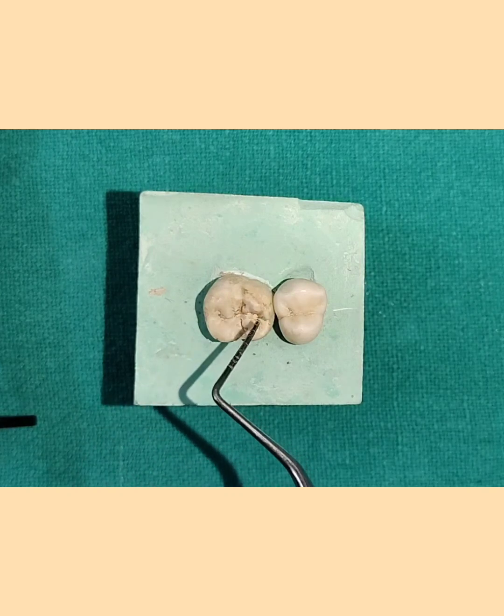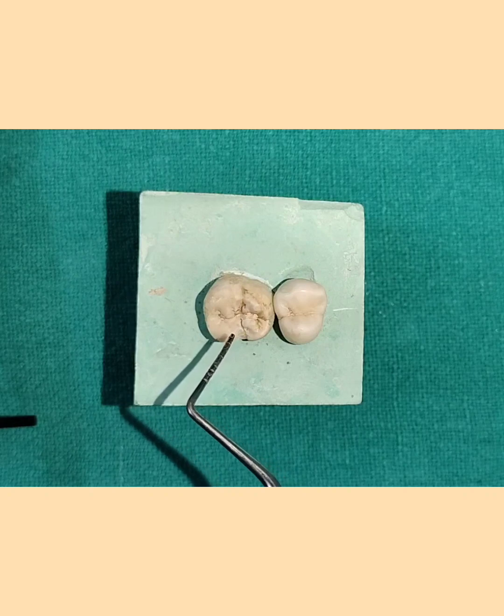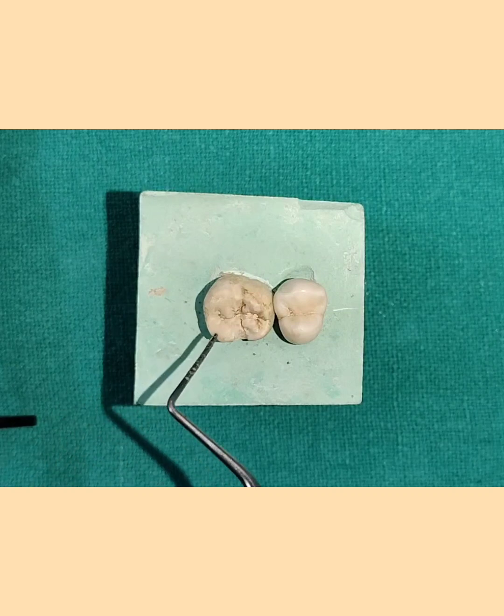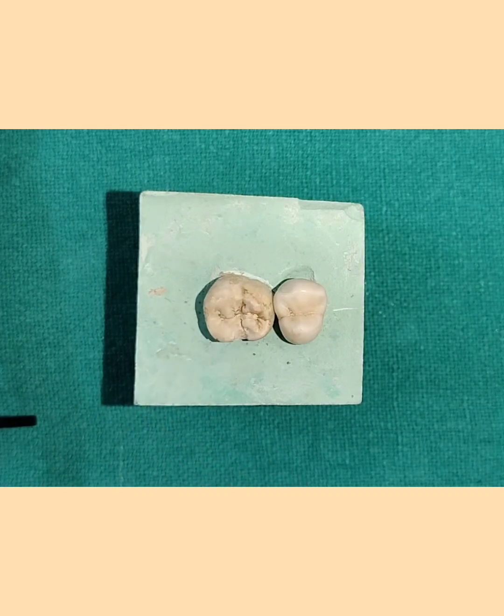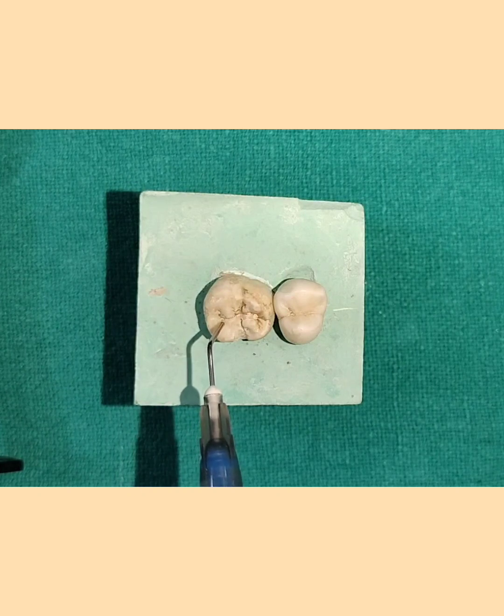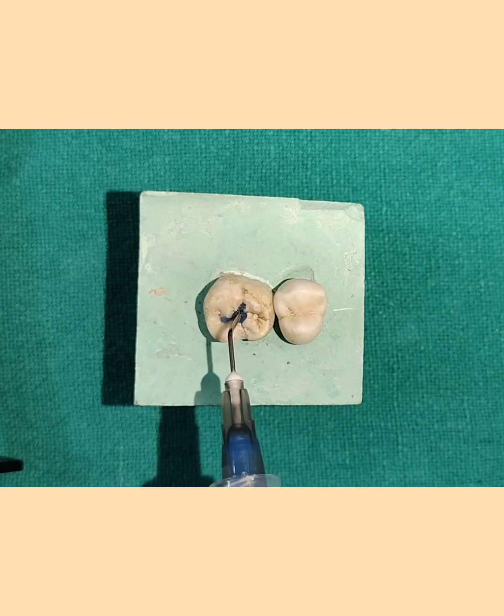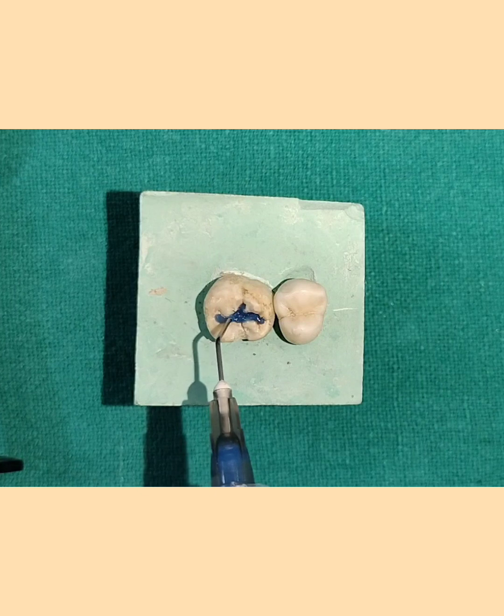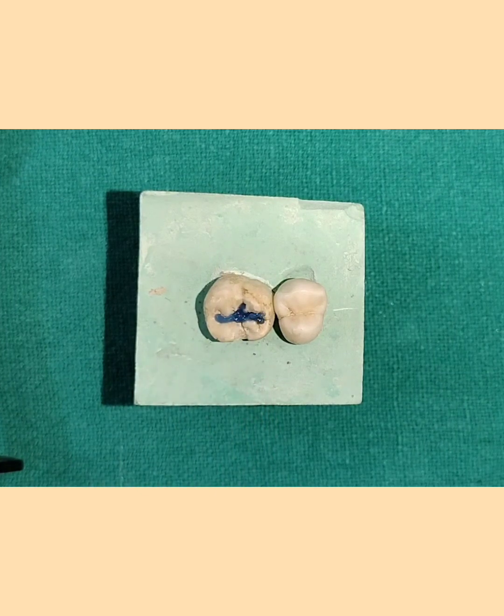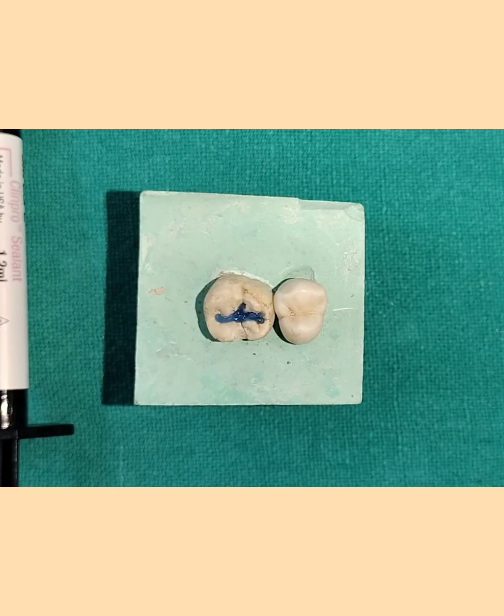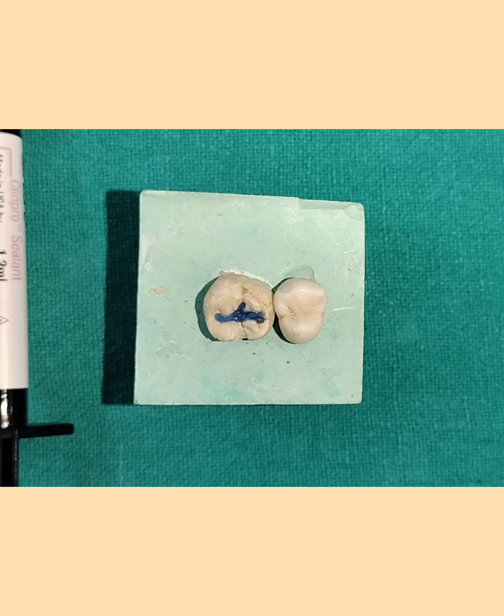Next step is to etch this surface. Now we have to etch it or you can use a self-etch adhesive. Either you use a regular etch adhesive or you use a self-etch adhesive in which case you don't have to etch the surface. You directly have to apply it. Now here I will be showing you how to etch it. So just flow this material like this and etch this surface for around 30 to 60 seconds. So wait for 30 to 60 seconds. At least 30 seconds is important.